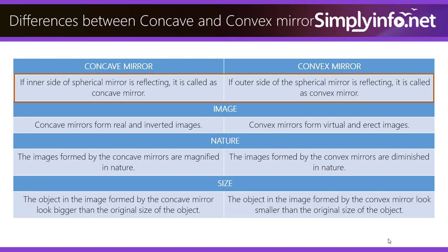The object in the image formed by the concave mirror looks bigger than the original size of the object. Whereas in convex, they look smaller than the original size of the object.